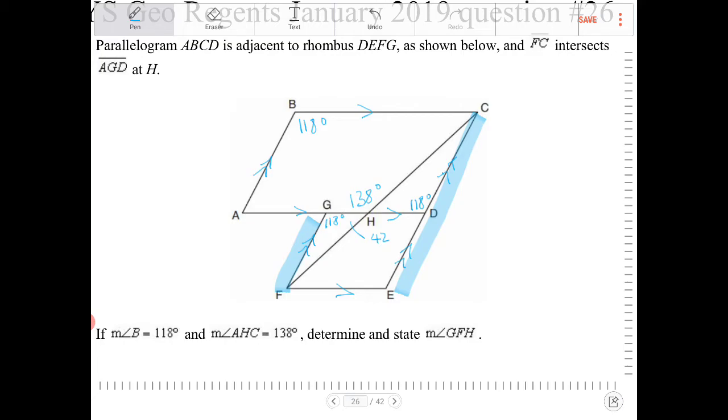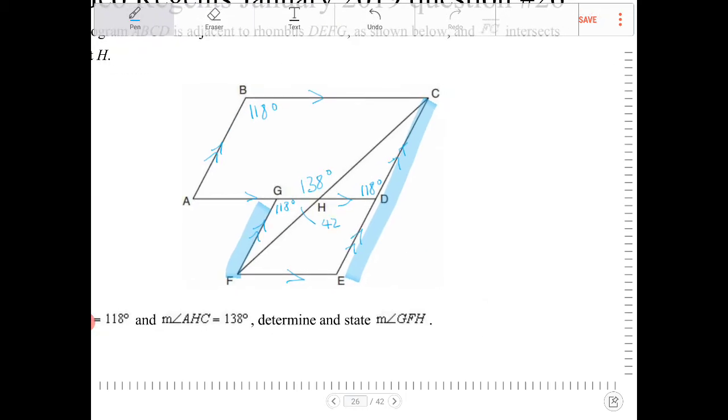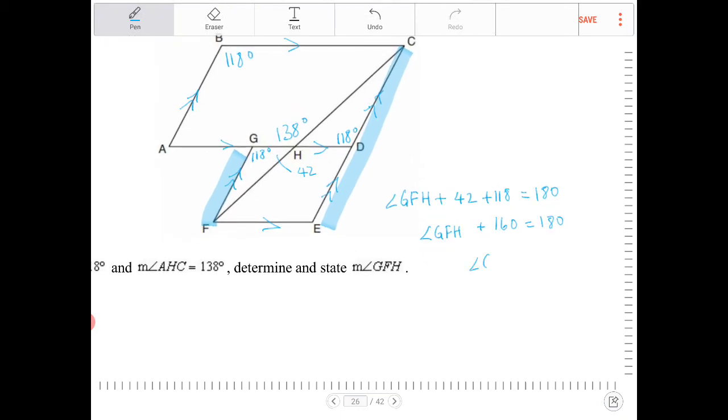So now the only angle that I don't know in triangle GFH is angle GFH. So angle GFH plus 42 plus 118 all has to equal to 180. If I add 42 and 118 together, I get 160. And subtracting both sides by 160, I get angle GFH. Therefore, it is equal to 20 degrees.